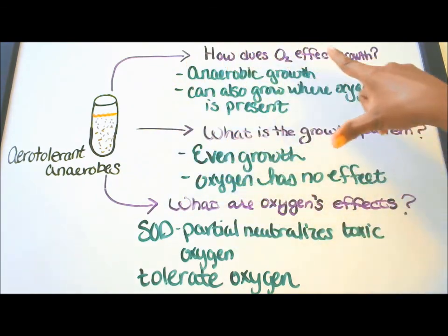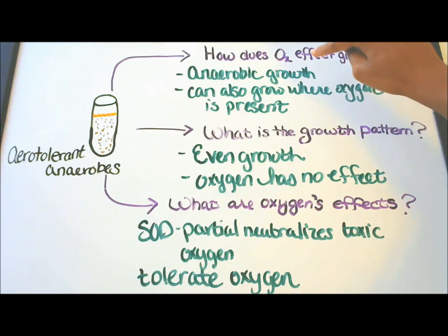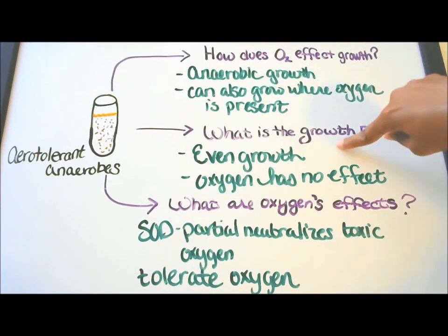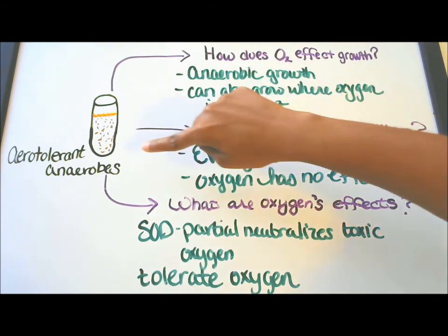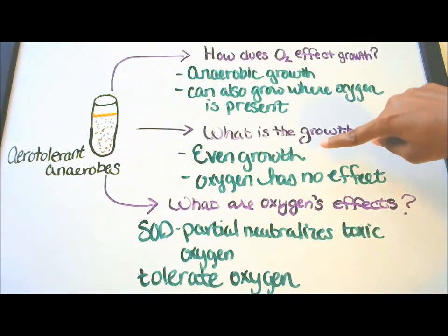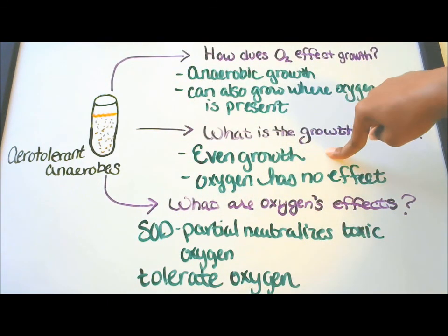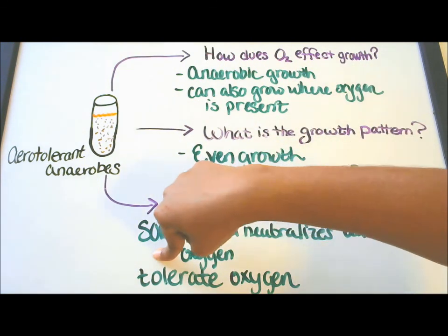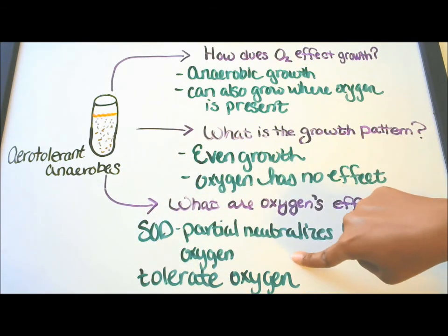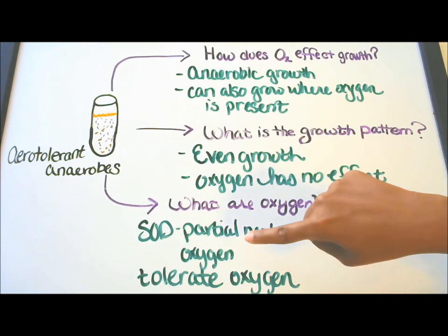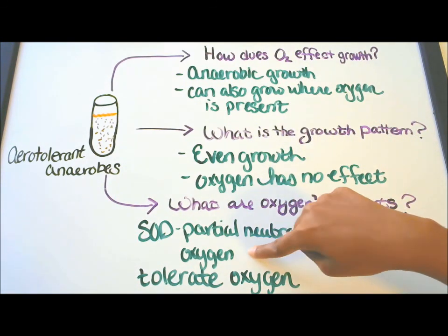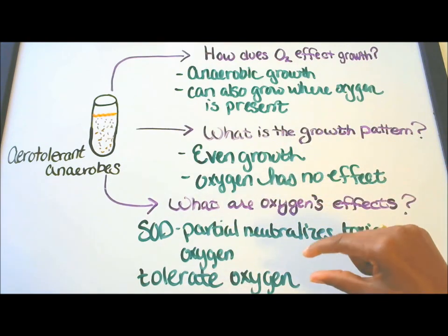How does oxygen affect growth for aerotolerant anaerobes? There's anaerobic growth only, but they can also grow where oxygen is present. Their growth pattern is that they grow evenly in the medium, so oxygen has no effect. What are the effects of oxygen? SOD — the enzyme that neutralizes toxic oxygen — is present, but there's no catalase. So there's a partial neutralization of toxic oxygen, and they can tolerate oxygen.